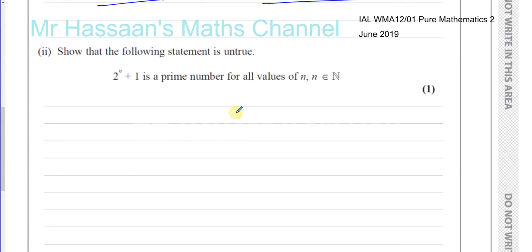So proving that this statement is false by finding one example that shows that it's not true. So this statement says that 2 to the power of n plus 1 is a prime number for all values of n, where n is a natural number. Natural numbers are the counting numbers starting from 1, 2, 3, 4, 5, and so on.